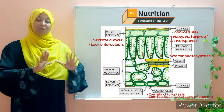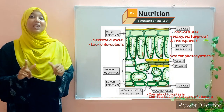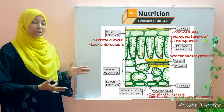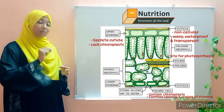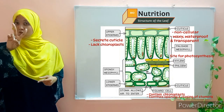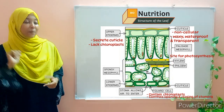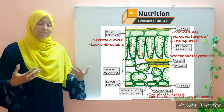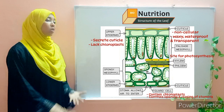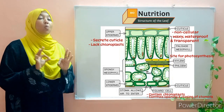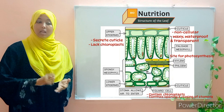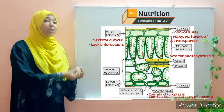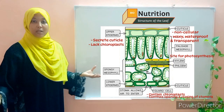The veins we discussed in the external structure each consist of a vascular bundle, which contains two tissues: xylem and phloem. The xylem transports water and mineral salts to the leaf — both essential requirements for photosynthesis. The phloem transports the food manufactured by the leaves to the rest of the plant.